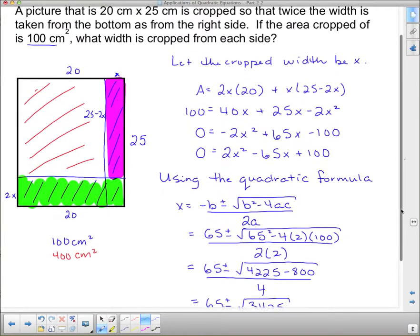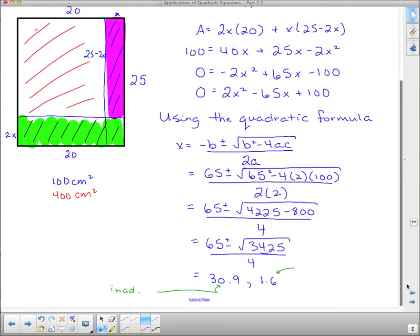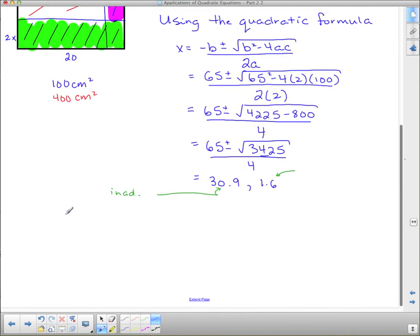Now, let's make sure we answer the exact question. It says if the area cropped off is 100 square centimeters, what width is cropped from each side? So we just need the x and the 2x. So you must crop 1.6 centimeters from the right and 3.2 centimeters from the bottom. And that concludes our course.